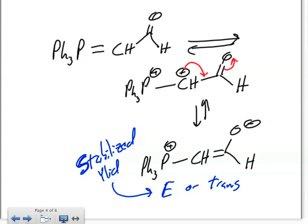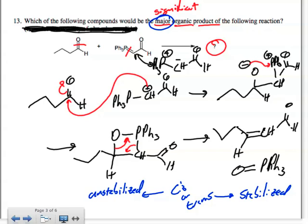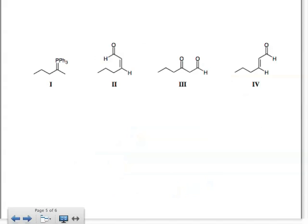So going back to our previous page, we can see that this over here should actually be the trans, which means that I'm going to draw this double bond in this fashion. Alright, so then let's look at our choices.